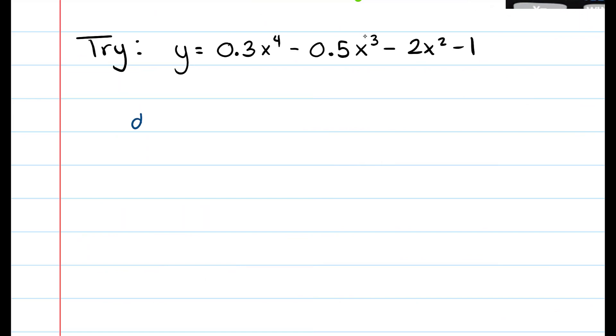So we have dy dx is equal to 1.2x cubed minus 1.5x squared minus 4x. And so what we want to do is plug that in our calculator and use it to find the zeros.